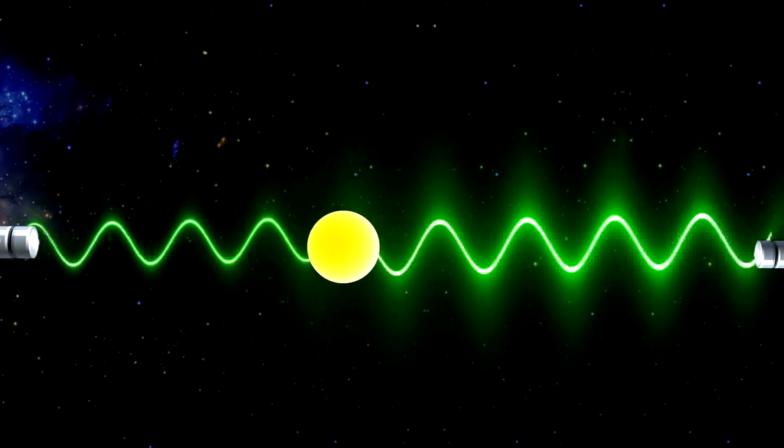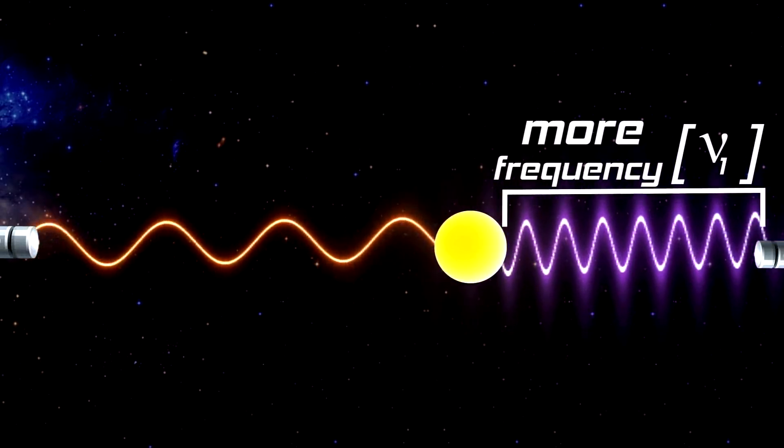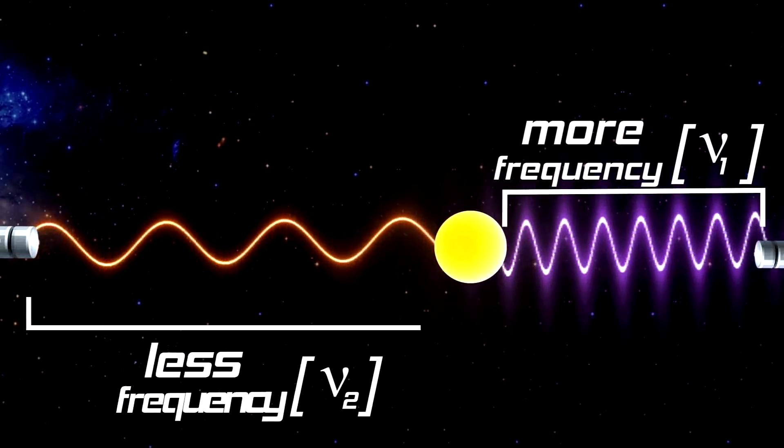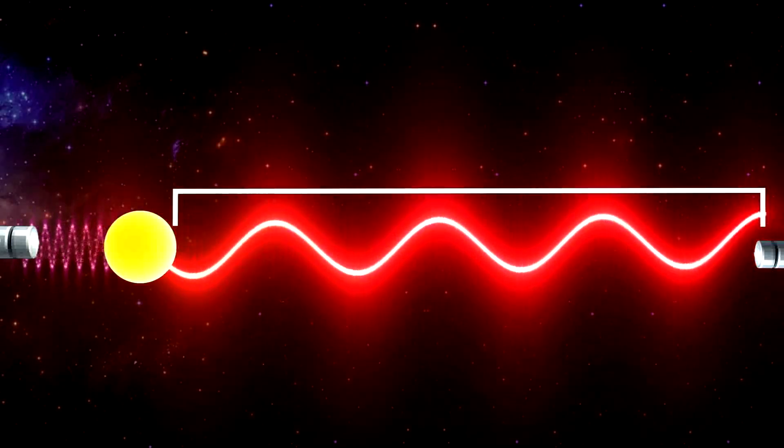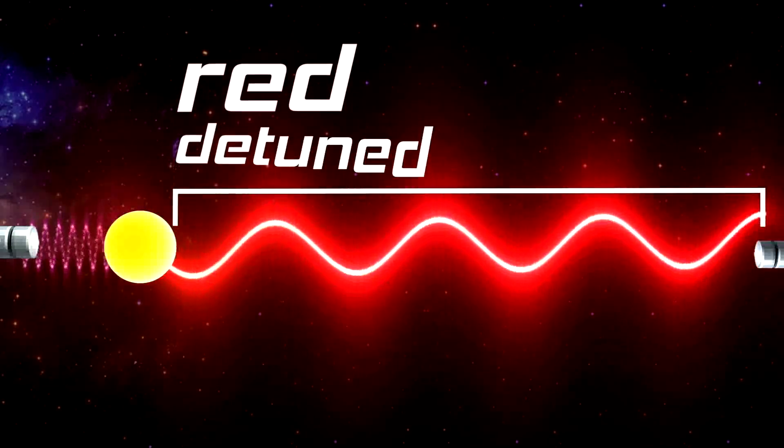Due to Doppler's effect, the frequency is more for the photon coming towards the particle and less for the photon from which the particle is moving away. Because the selected frequency is less than the transition frequency, it is said to be red detuned.